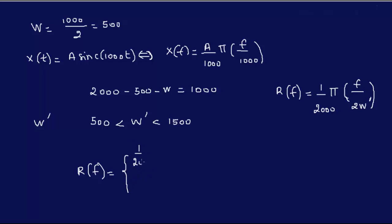1 over 2000 for when your f is less than the bandwidth 500, and if it's between 500 and 1500 it can be pretty much anything. So I'll just write